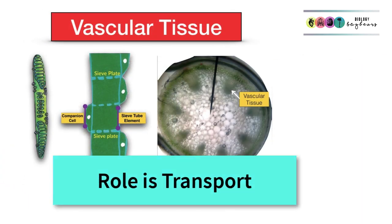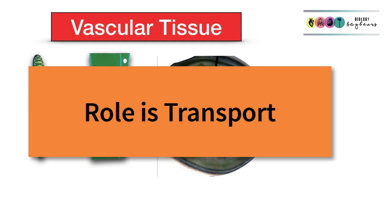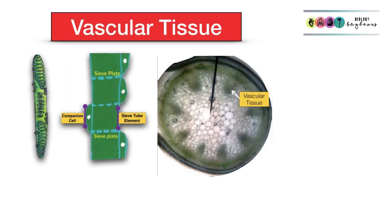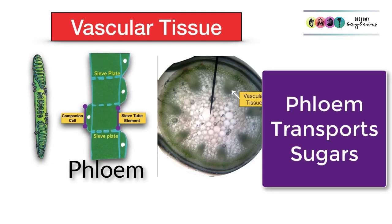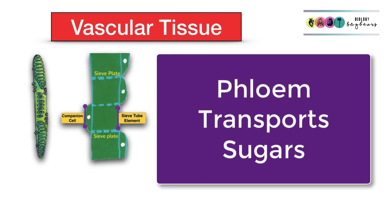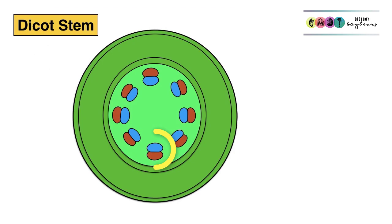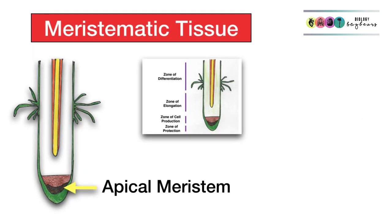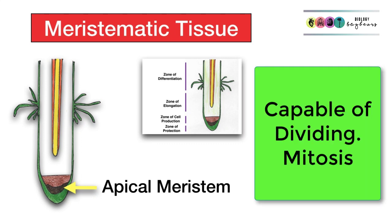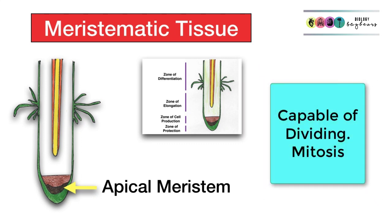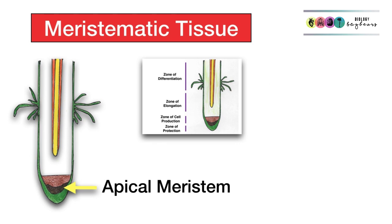Next is vascular tissue, whose role is transport. There are two types: xylem, which transports water upwards through the plant, and phloem, which transports food downwards. They are usually found in structures called vascular bundles. There is also meristematic tissue, found in particular places such as the root tips and shoot tips. It is made up of undifferentiated cells capable of dividing by mitosis, and it is responsible for plant growth.